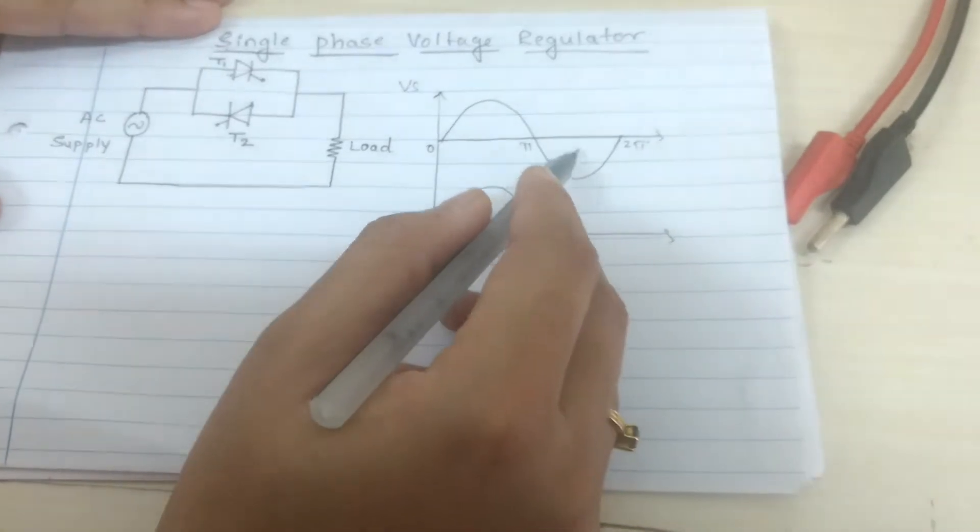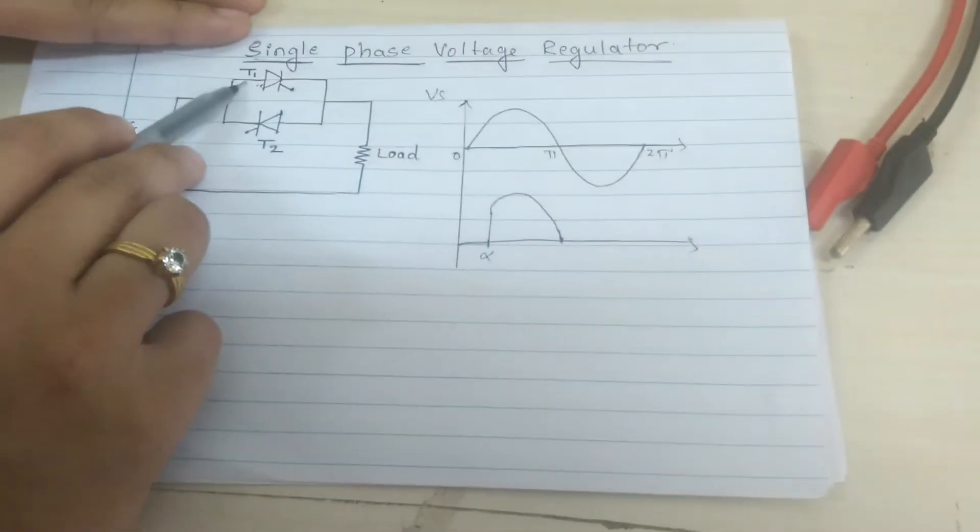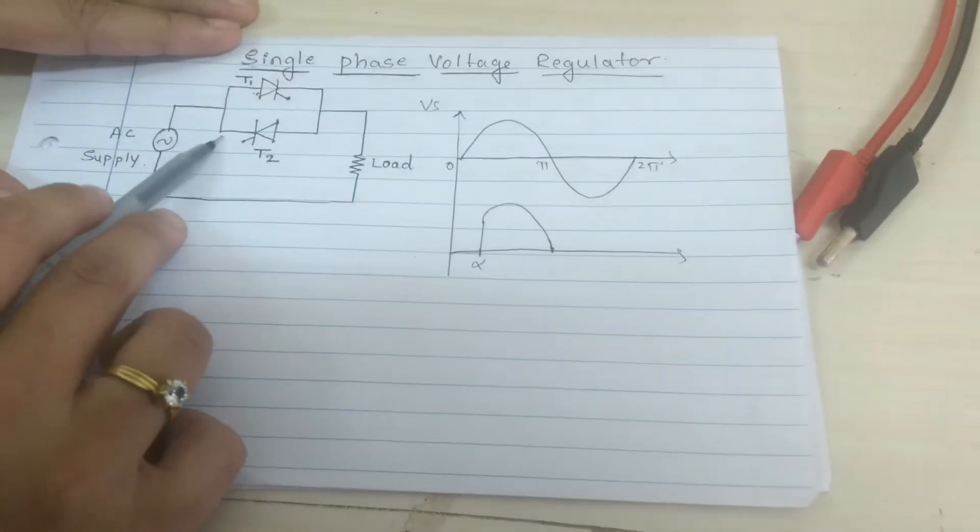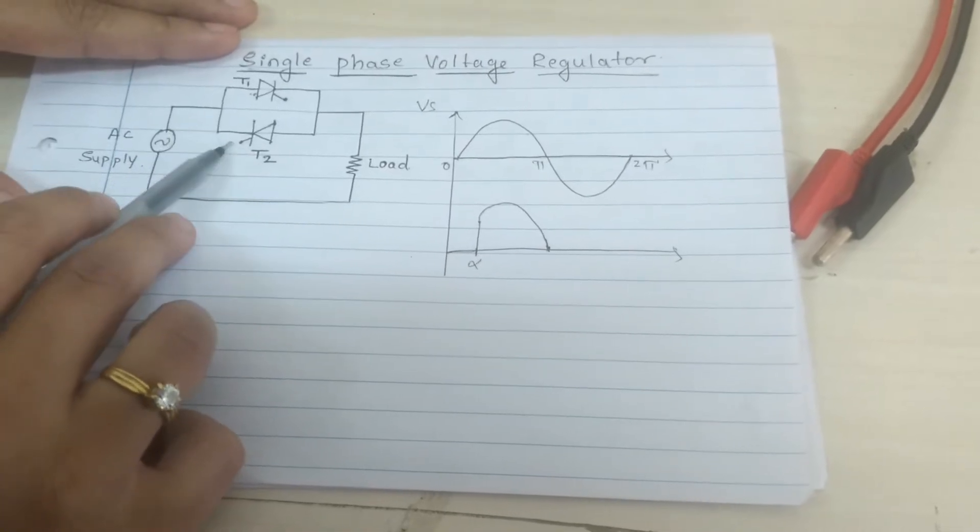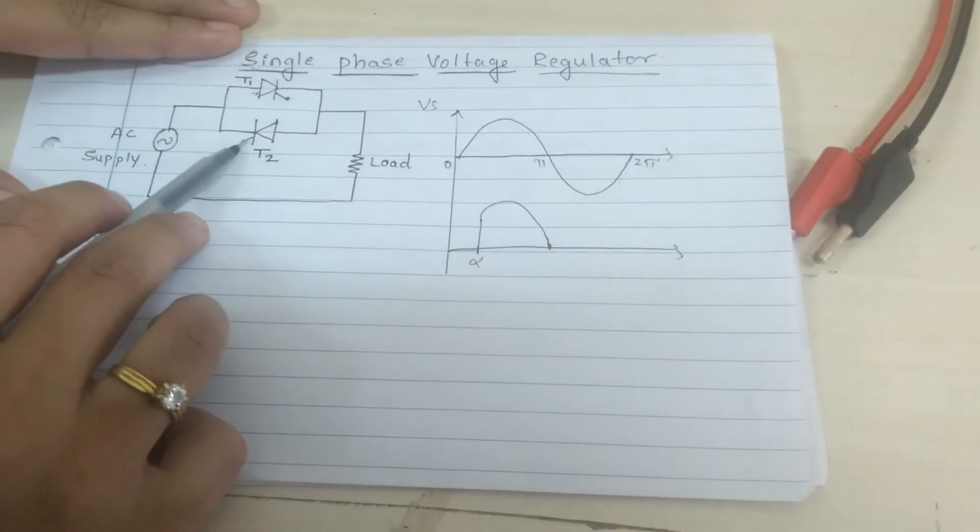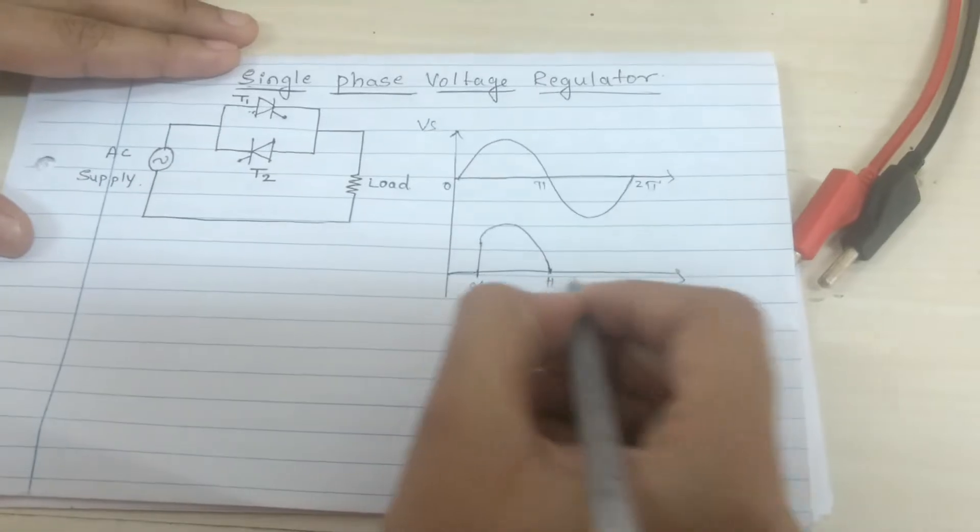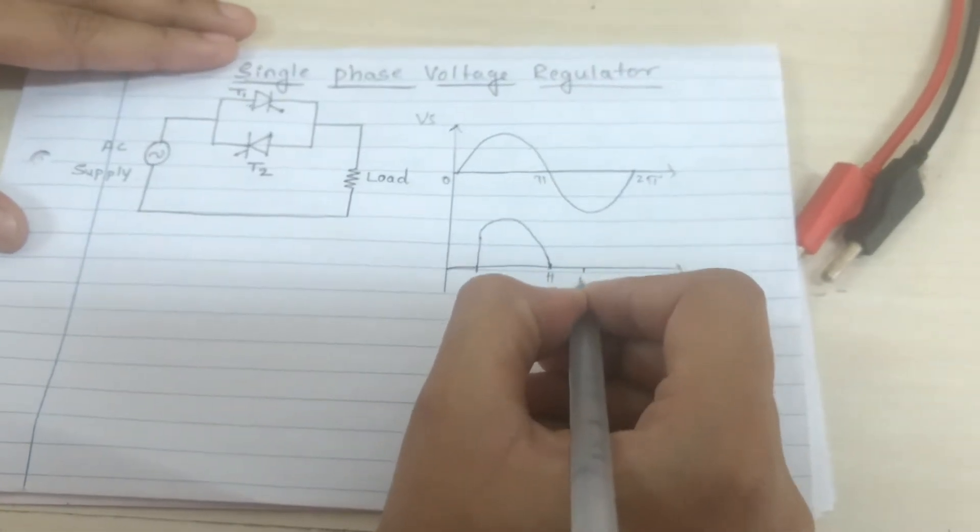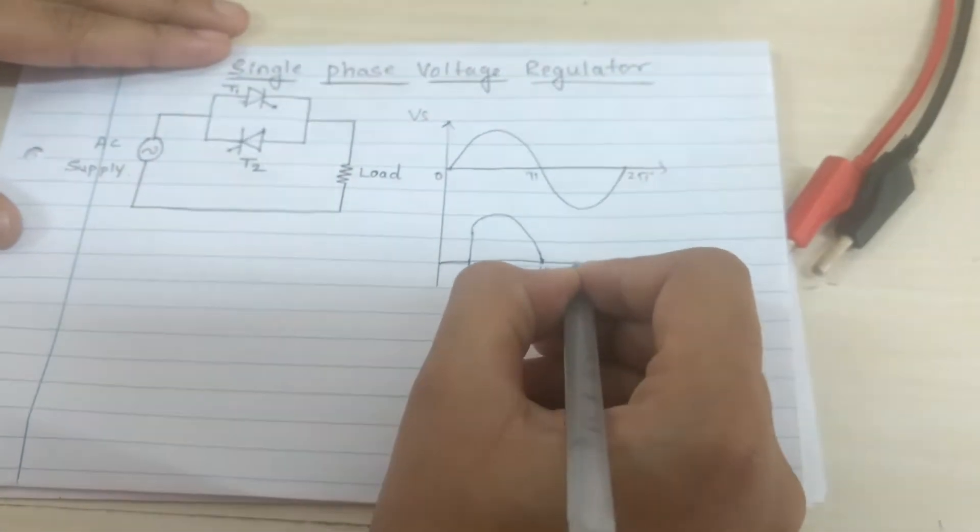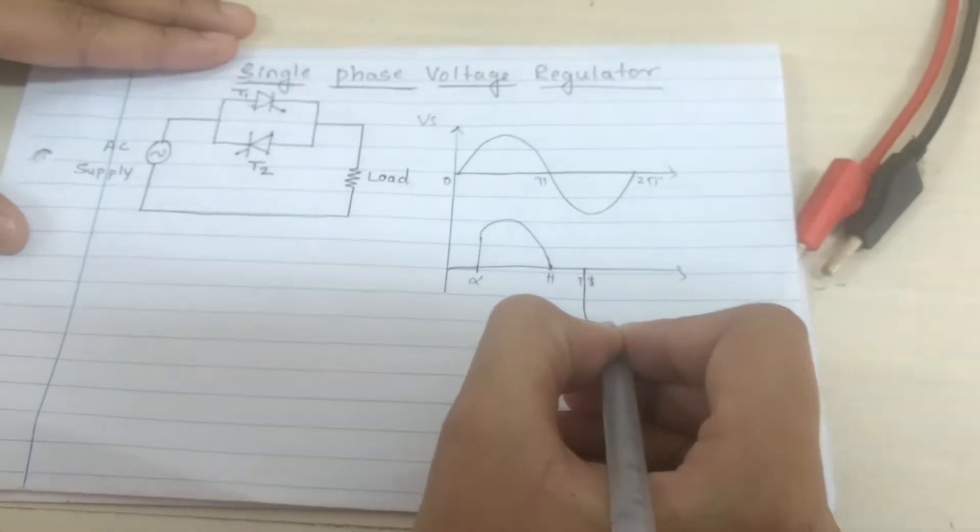During negative half cycle, T1 gets reverse biased and T2 gets forward biased. But T2 starts conducting from pi plus alpha. From here the negative half cycle starts conducting.